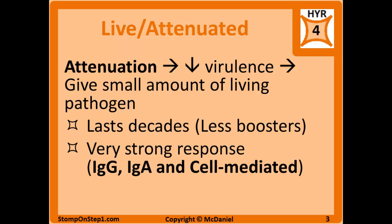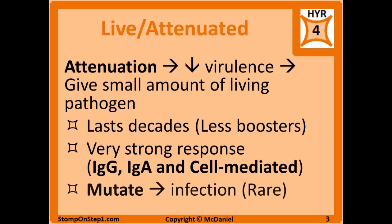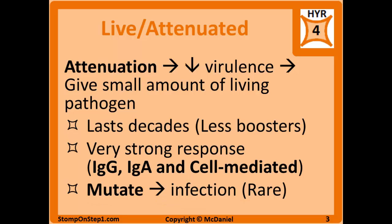The immune response to live attenuated vaccines is also very strong because the live pathogen can induce more types of immune response, including humoral immunity (mainly IgG), mucosal immunity (IgA), and even some cell-mediated immunity. However, there is one big drawback: because you're giving a live pathogen, there's a chance that through mutations or adaptations, that live pathogen can revert back to the infectious form. It is extremely rare, but it's possible that this attenuated virus or bacteria can revert to the original form and cause disease.